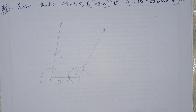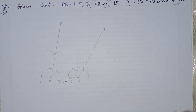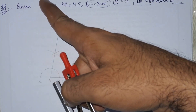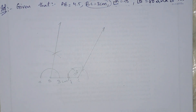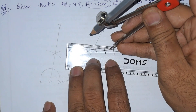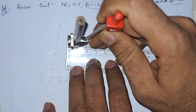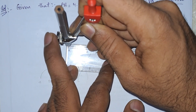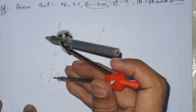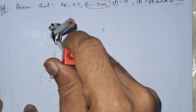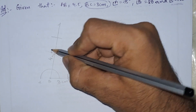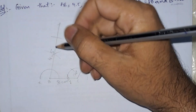Next, after getting 80 degrees, we mark point A. From A to B is 4.5 centimeters, so let us take the radius of 4.5 centimeters from B to A. This gives us the 4.5 centimeter measurement.